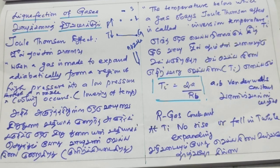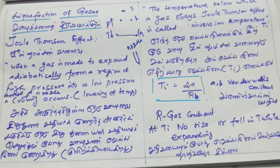Adiabatic change is very fast. If the temperature is low, the temperature will be reduced further. So when the gas is made to expand adiabatically from a region of high pressure into a low pressure, cooling occurs.